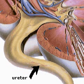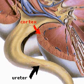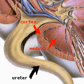The cortex, or outer region of the kidney, houses the glomerulus of each nephron. The medulla, or inner region of the kidney, contains the loops of Henle and the collecting ducts.